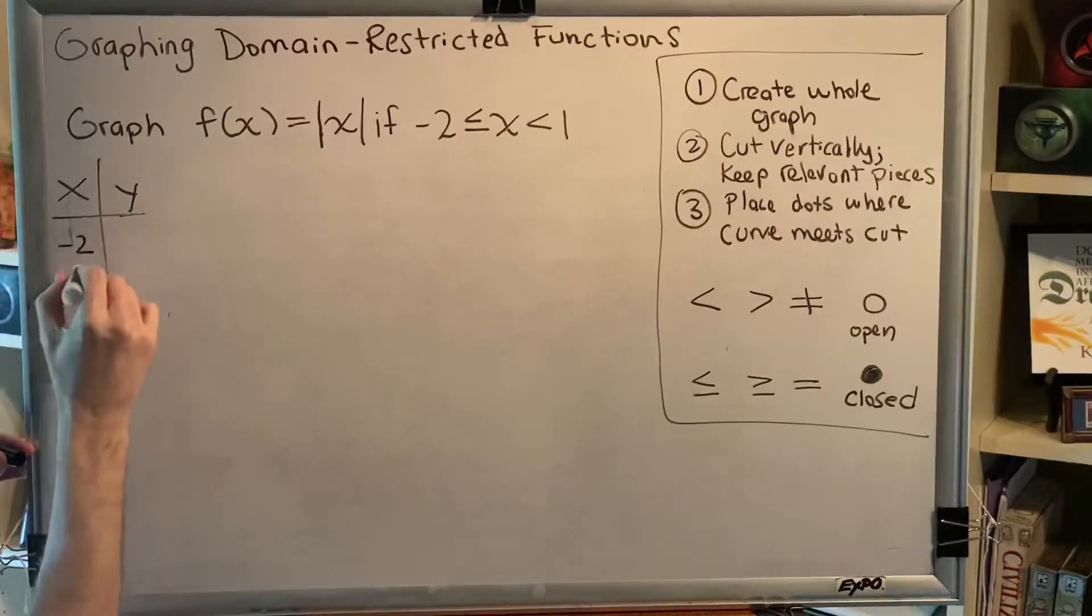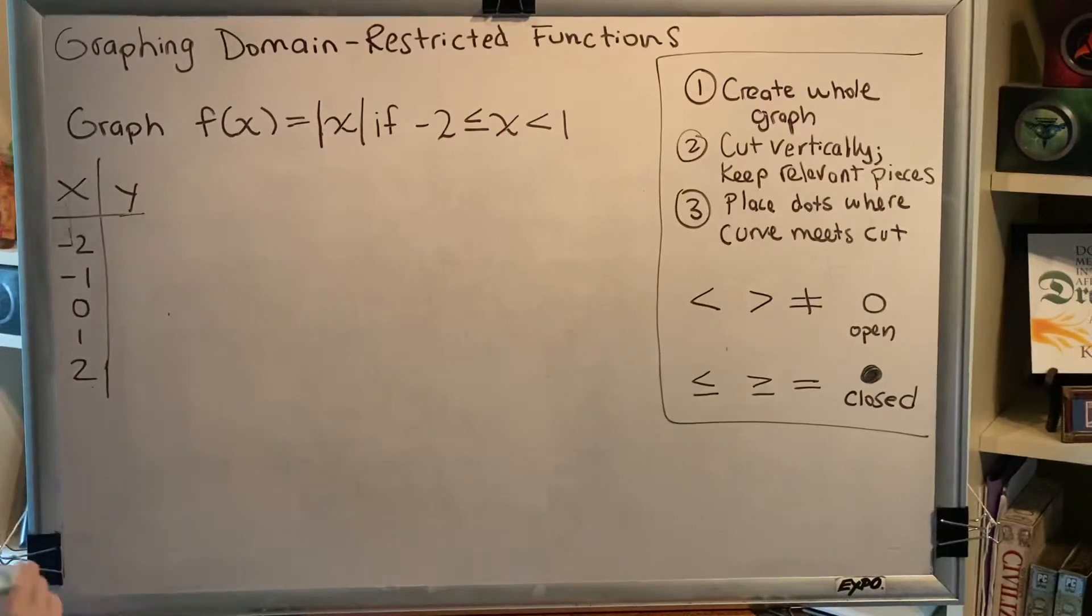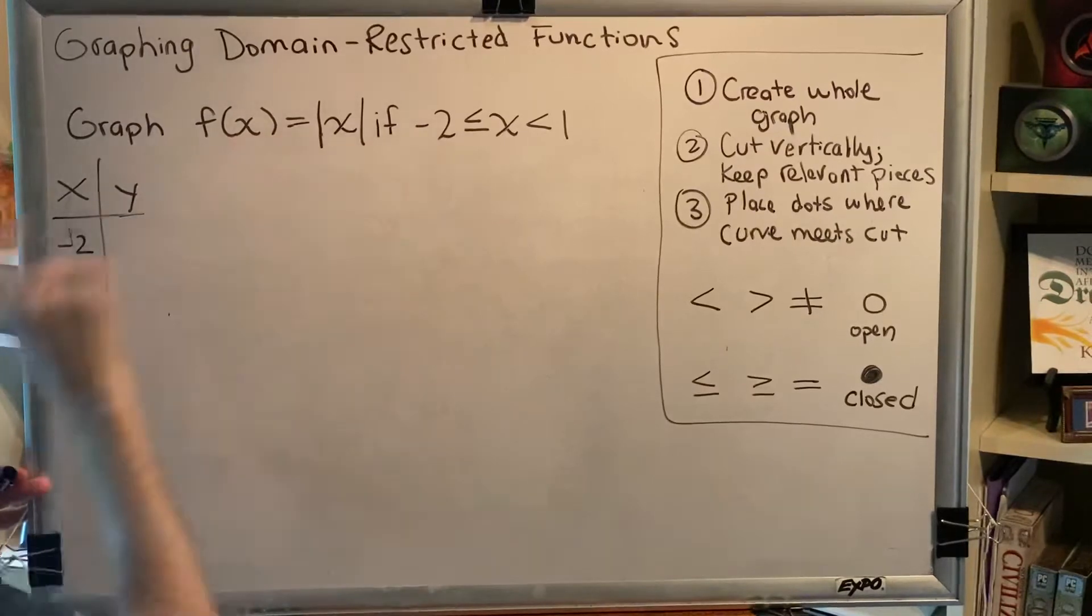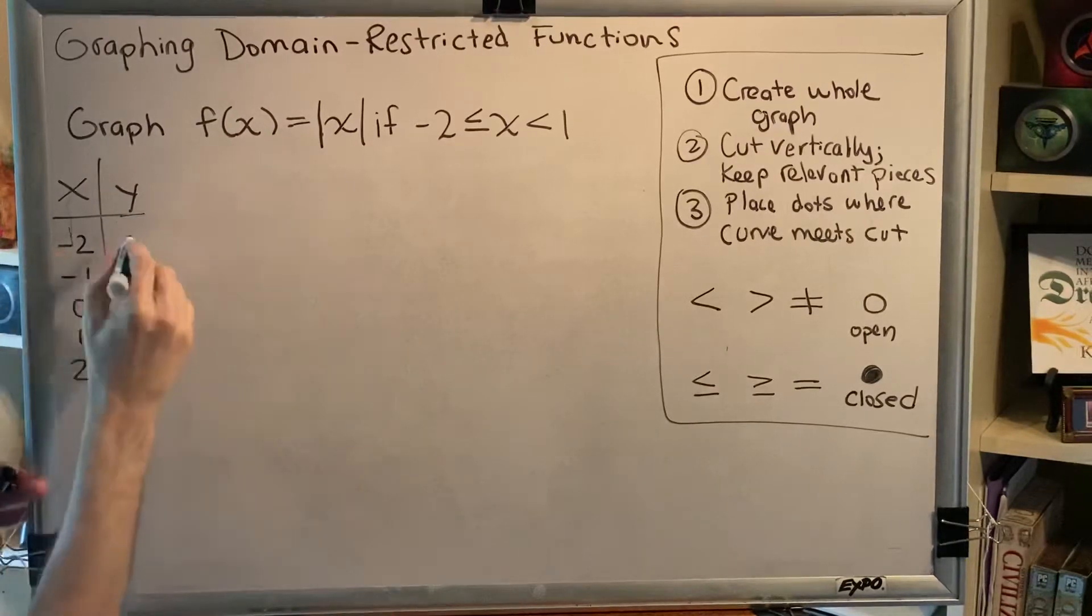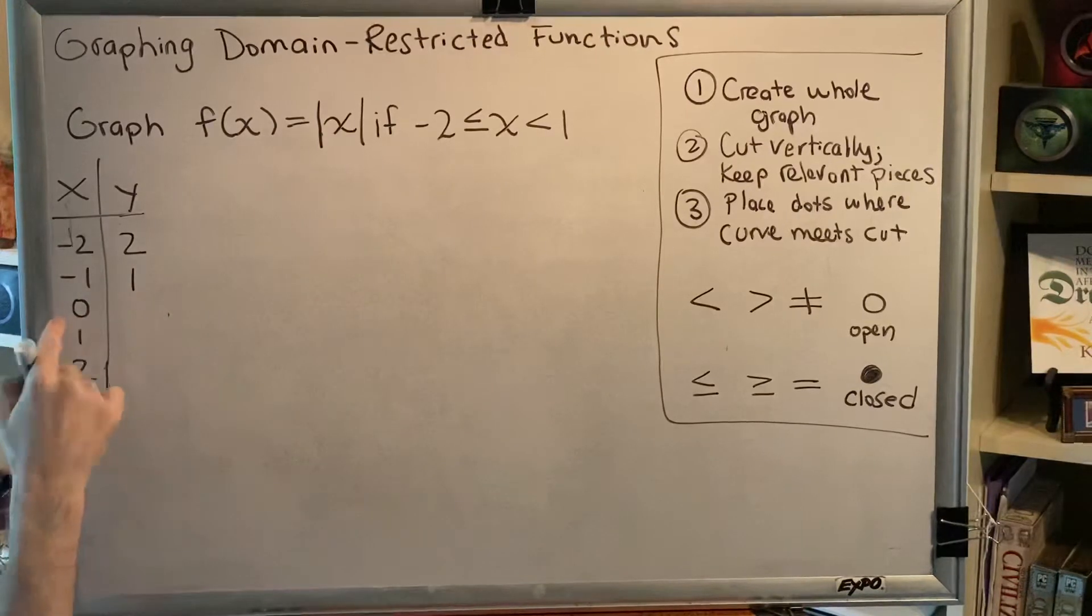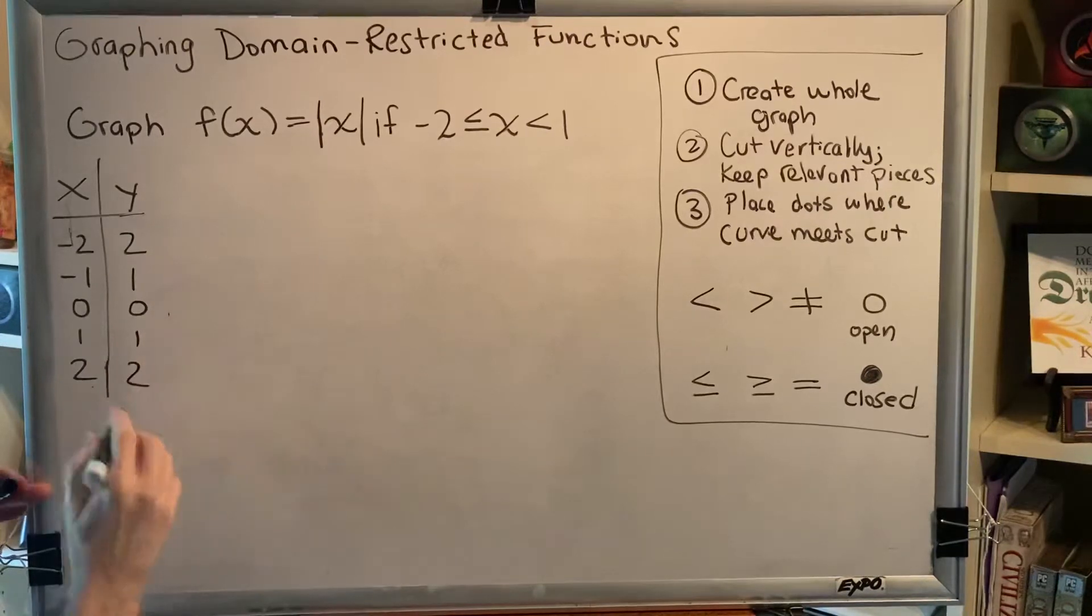The x's we will use are negative 2, negative 1, 0, 1, and 2. And to find y from x, we just have to remember that y equals the absolute value. So the absolute value of negative 2 is 2, the absolute value of negative 1 is 1, the absolute value of 0 is 0, the absolute value of 1 is 1, the absolute value of 2 is 2.